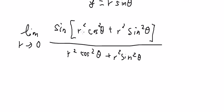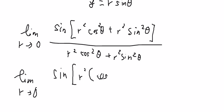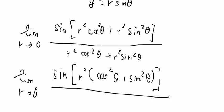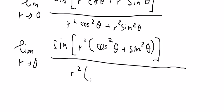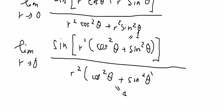We do factorization with R squared. We know that cosine squared theta plus sine squared theta equals one, so both the numerator's inner expression and the denominator simplify using that identity, each equaling one.